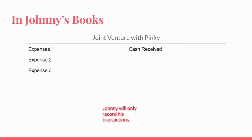The joint venture account in Johnny's books is part of the double entry system. You can complete the double entry easily. For cash received, the other account will be cash — there is a separate cash account in Johnny's books where this amount will be debited. Similarly, for any expense, say electricity expense, the other account used to complete the double entry is the electricity account. If it's being debited in the joint venture account, the electricity account will be credited. They might ask you to pass a journal entry — since joint venture is being debited, the electricity account will be credited.